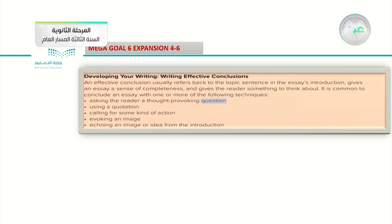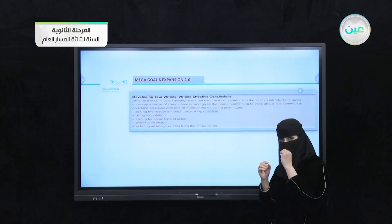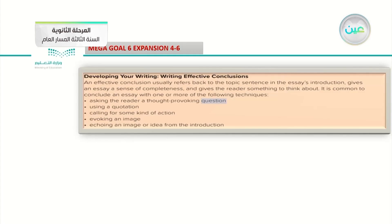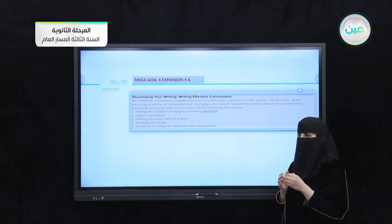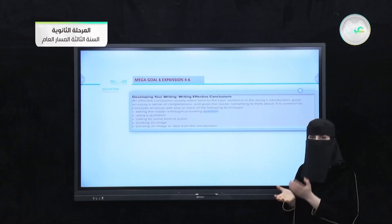Developing your writing — writing effective conclusions. An effective conclusion, by definition, usually refers back to the topic sentence in the essay's introduction. At the start of our conclusion, we take some information from the introduction of our essay and put it inside our conclusion. This gives an essay a sense of completeness and gives the reader something to think about. You should make a sense for your readers and apply some things that keep your reader excited about what you write.